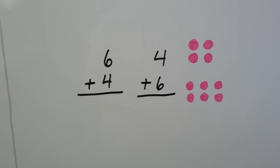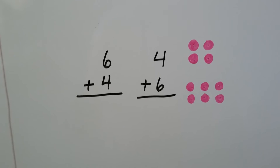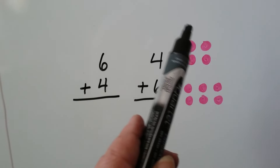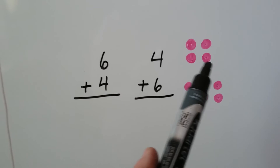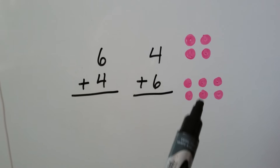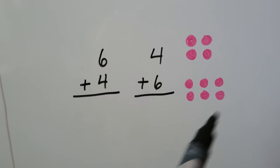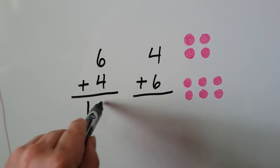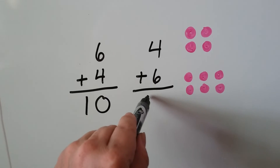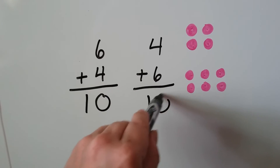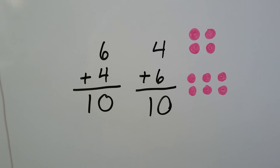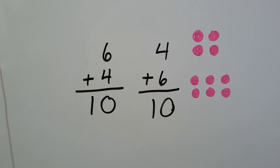Here we have six plus four and four plus six. Counting one through ten. It's going to be six plus four equals ten, or four plus six equals ten, because it doesn't matter which order we added them.